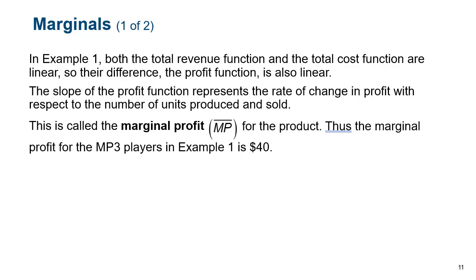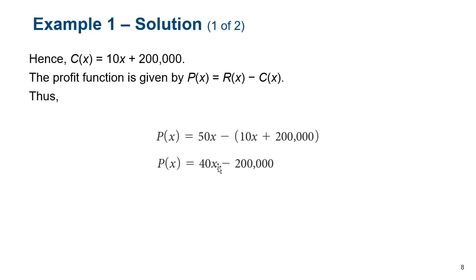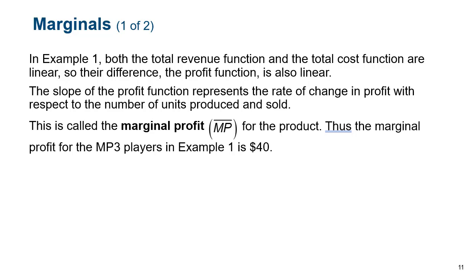Marginal profit is the slope of the profit function, because it tells you how much money you make for each additional item produced. Marginal always means one more unit — so marginal profit is how much profit you produce after one more unit is sold. Since our profit function is 40x − 200,000, as x goes up by one we get an extra $40. That's the slope: m = $40, intercept B = −$200,000. The slope is the same as our marginal, so we're making $40 for each additional unit produced.